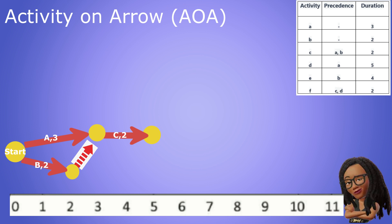Activity D only has A as a predecessor. So we draw an arrow from A's terminating node for a length of five days which means activity D terminates at day eight on the timeline.